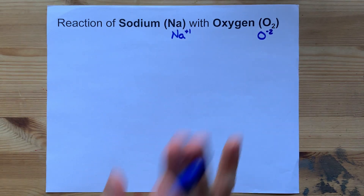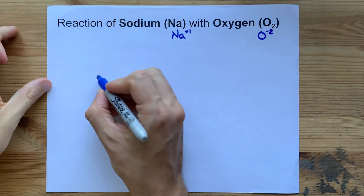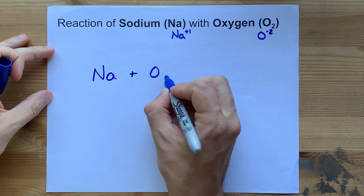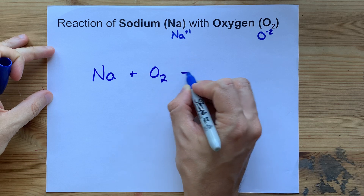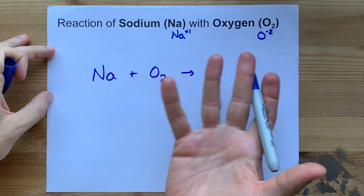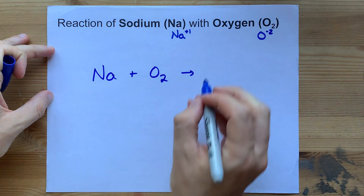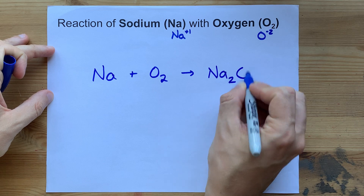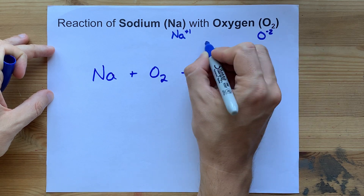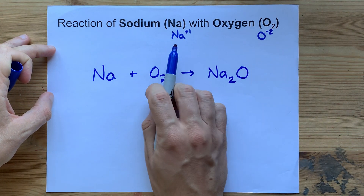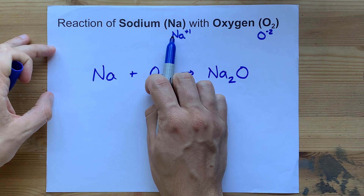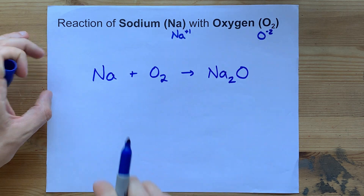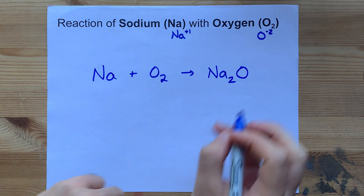The answer your teacher wants to hear is that sodium plus oxygen will make the ionic compound between the two, which is Na₂O. Notice I crisscross the charges here — I need two of the Na's to cancel charge with one of the O's.